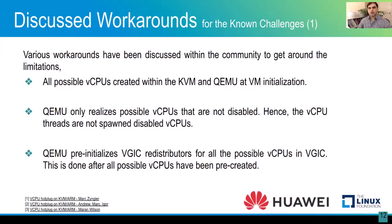Various workarounds have been discussed within the community over the years. One is that all possible VCPUs are created within KVM and QEMU at VM initialization — a kind of pre-creation of all VCPUs. However, QEMU only realizes VCPUs that are not disabled. The realization of a VCPU means threads are also spawned, but as per the new changes, threads are not spawned for disabled VCPUs, which saves resources and fits neatly within the way QEMU works for the normal case.